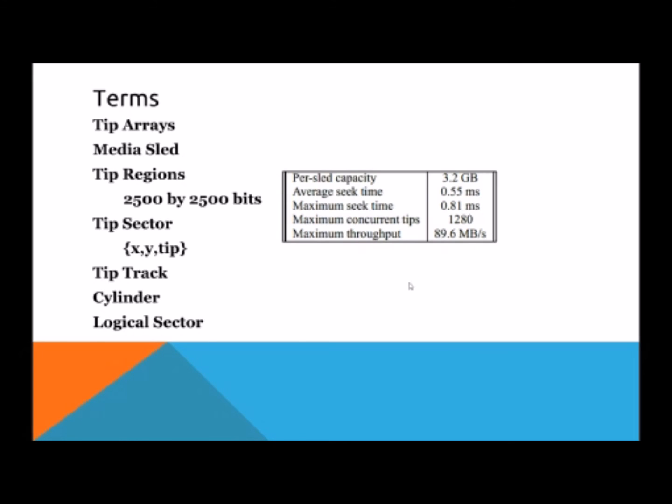The next three terms are more general terms that don't matter too much, but they are useful. For example, the tip track is all of the bits that a tip array is able to access on the X-axis, so just reading one row of data. The cylinder is all the tip tracks combined in one X-axis. The logical sector is all of the tip regions that are able to be read at once. All of the tip regions are next to each other, but due to physical constraints, the ones next to each other are not necessarily able to be read or written upon at the same time. So logical sectors are divided into areas that can be working in parallel. And it is that parallelism that allows the speeds to be extremely high.